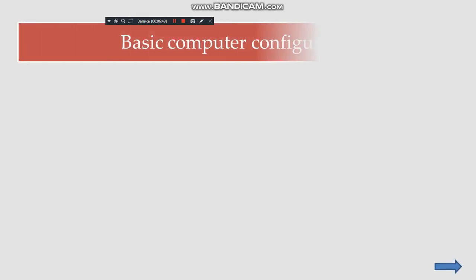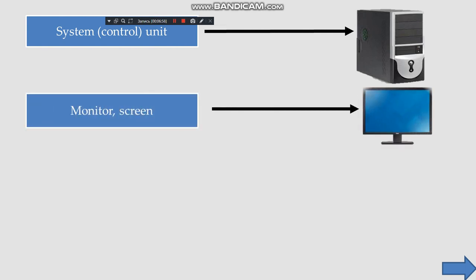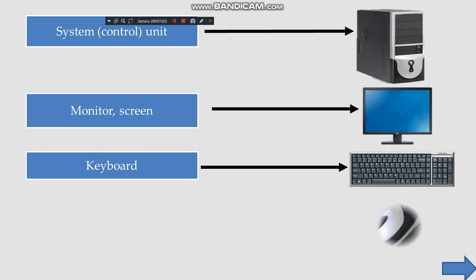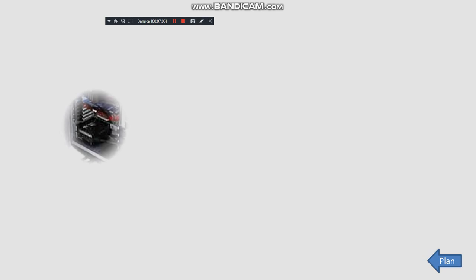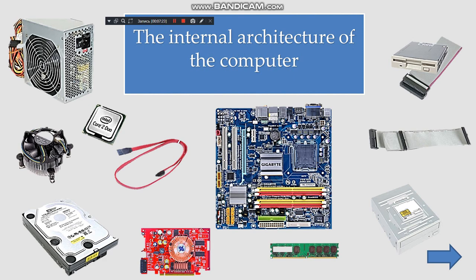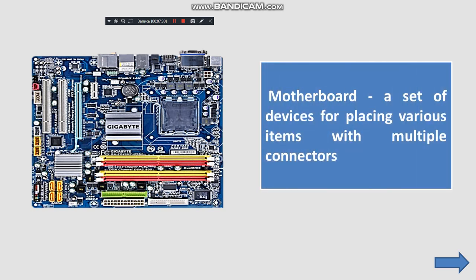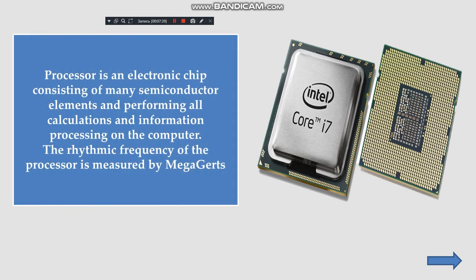The basic computer configuration includes a system control unit, monitor screen, keyboard, and mouse. Optional devices include a printer, modem, scanner, and microphone. The internal architecture of the computer centers on the motherboard — a set of devices connecting various items with multiple connectors. The processor is an electronic chip consisting of many semiconductor elements, performing all calculations and data processing on the computer.